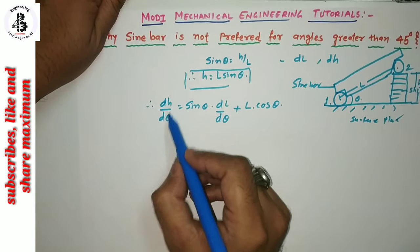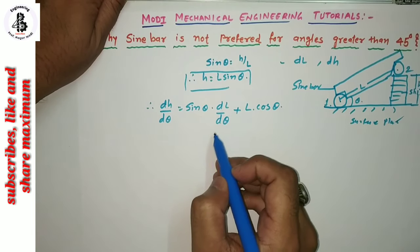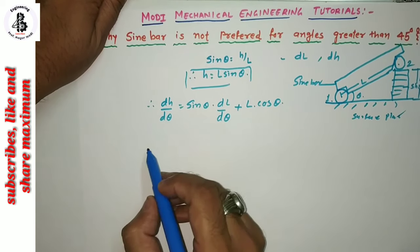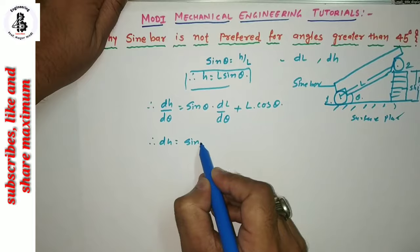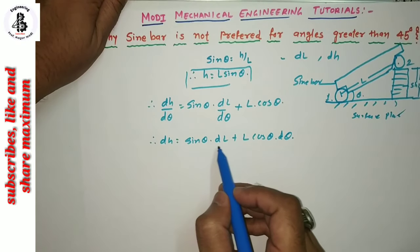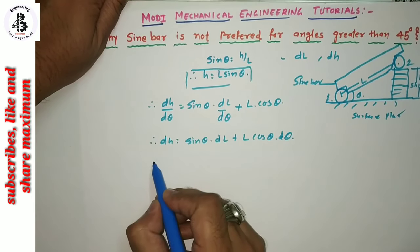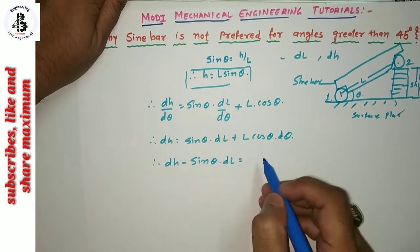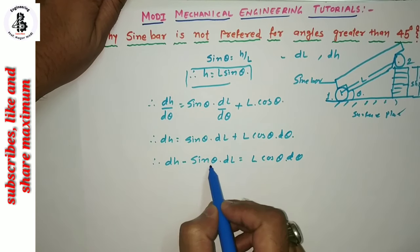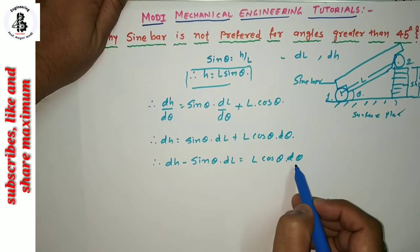Using the partial differential equation: dH upon d theta equals sine theta into dL upon d theta plus L into cosine theta. Therefore, dH equals sine theta into dL plus L cosine theta into d theta.